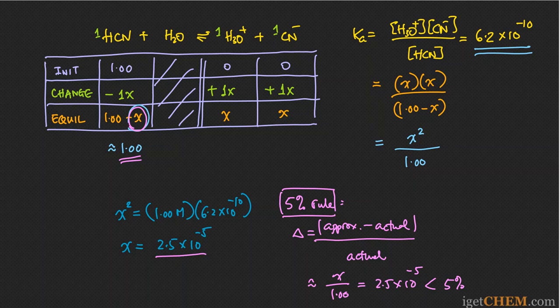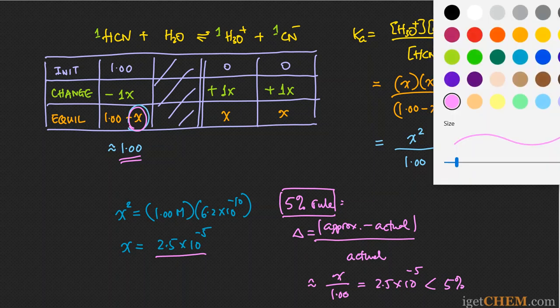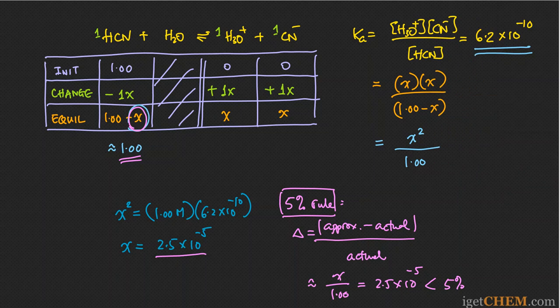Okay, so now that we have checked out the approximation we have applied is, in fact, a good approximation, we can finish the problem by calculating the actual pH value. In this case, the H plus concentration is x, which is 2.5 times 10 to the minus 5. So the pH is equal to negative log base 10 of that. So if you put that into your calculator, hit the log button and flip the sign, you will see that the number will turn out to be 4.60.